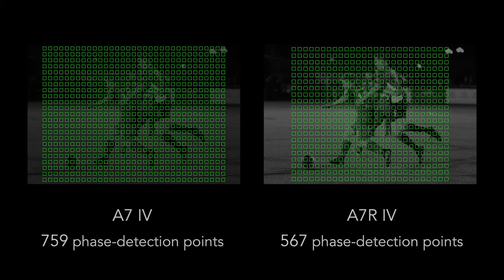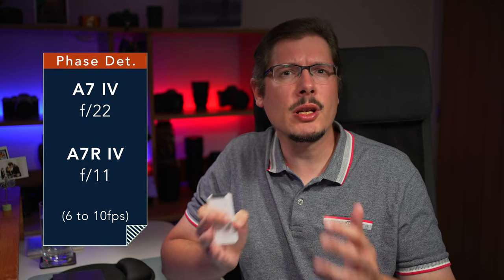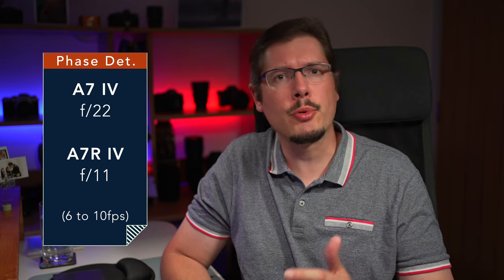Both cameras feature Sony's hybrid focus technology and advanced algorithm that includes real-time tracking and Eye AF. The a7 IV also features more phase detection points. In single autofocus I couldn't find any real difference between the two cameras — they are both fast and reliable. But the a7 IV has a one-stop advantage in low light, and its phase detection autofocus works up to f22 with medium and high continuous shooting speed, whereas the a7R IV can't manage a smaller aperture than f11.